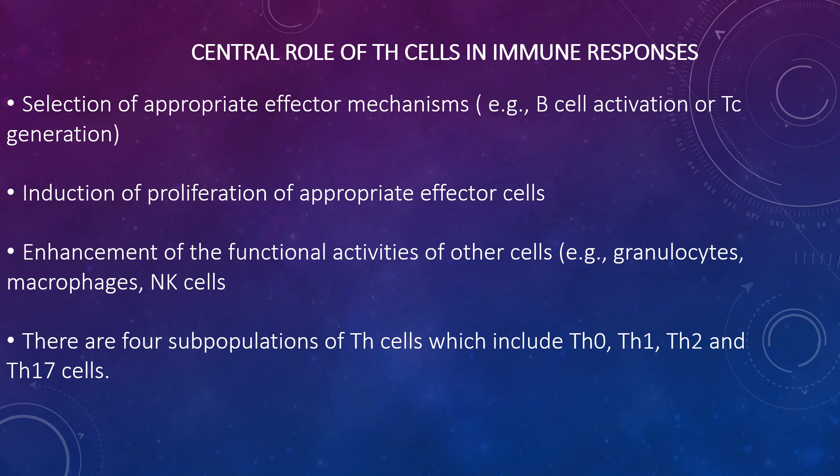There are four populations of T-helper cells: these are Th0, Th1, Th2, and Th17. When naive Th0 cells encounter antigens in secondary lymphoid tissues, they are capable of differentiating into inflammatory Th1 cells.